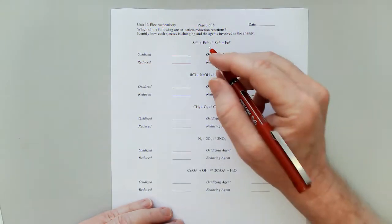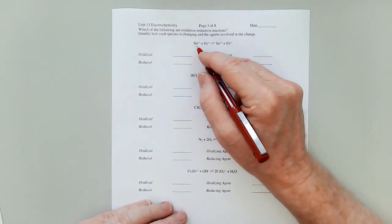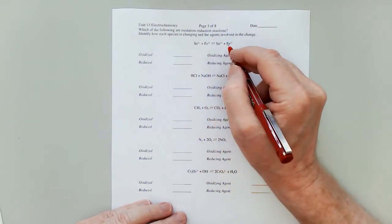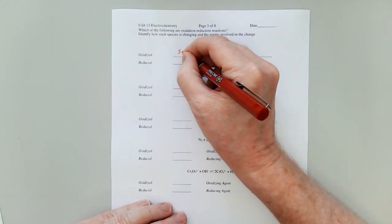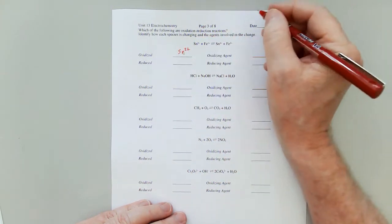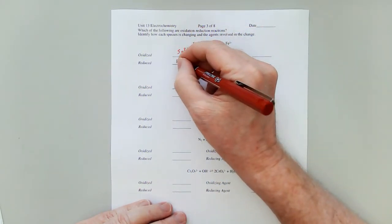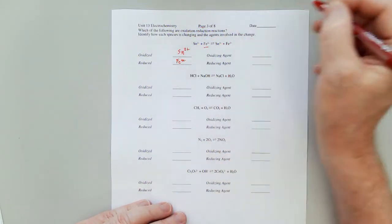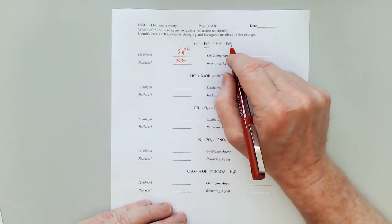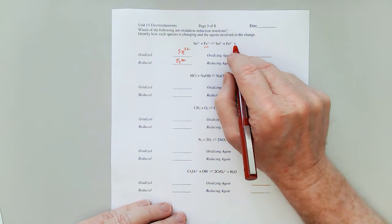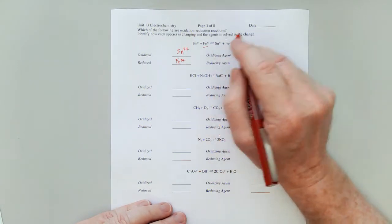So look at the charges here. Sn, tin, goes from a 2 plus to a 4 plus. That means it is losing electrons. The tin is oxidized, which tells me right away that the other thing, the Fe3 plus, must be reduced. But I can prove that because the Fe3 plus is going to Fe2 plus. So it's gaining electron. And tin lost some.